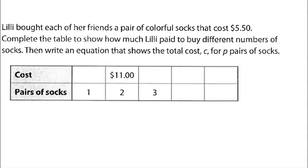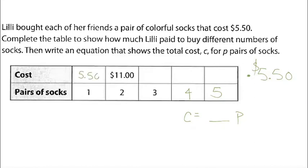Homework problem two: Lily bought each of her friends a pair of colorful socks that cost $5.50. Complete the table to show how much Lily paid for different numbers of socks. I fill in the easy column numbers first: 1, 2, 3, 4, 5. Then the cost values are those numbers times $5.50. One times $5.50 is $5.50; two times $5.50 is $11; three times $5.50 is $11 plus $5.50 equals $16.50; four times $5.50 doubles the $11 to get $22.